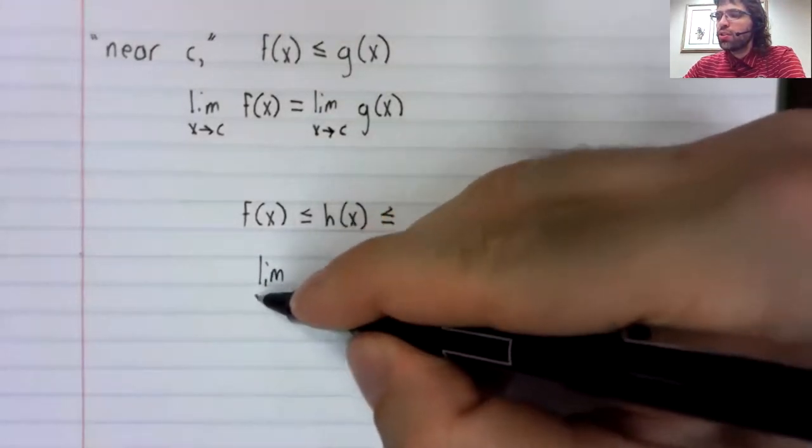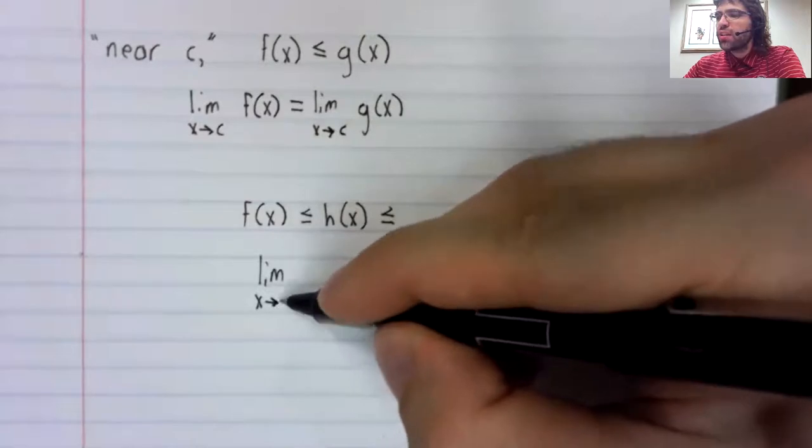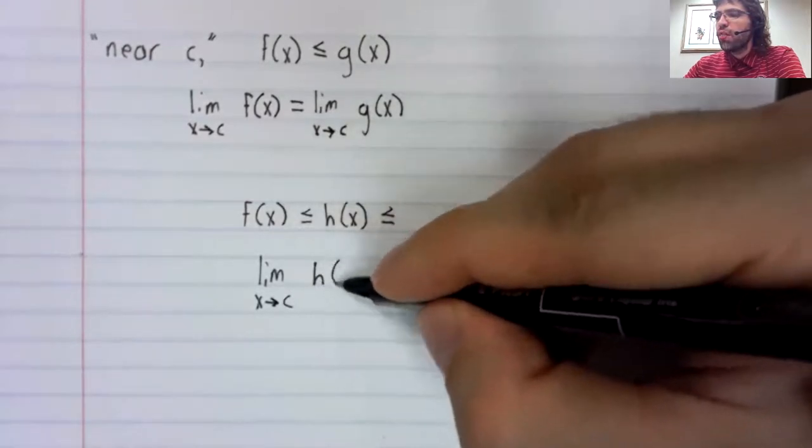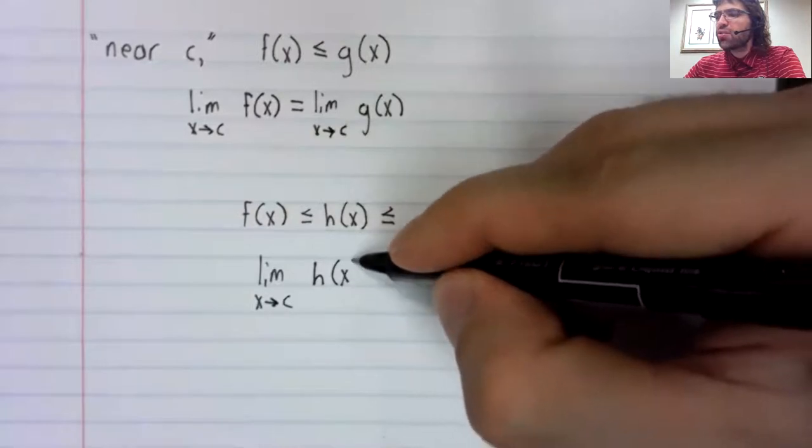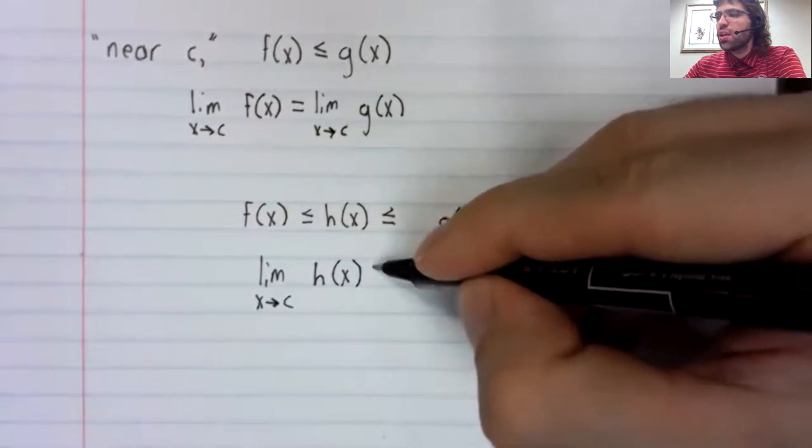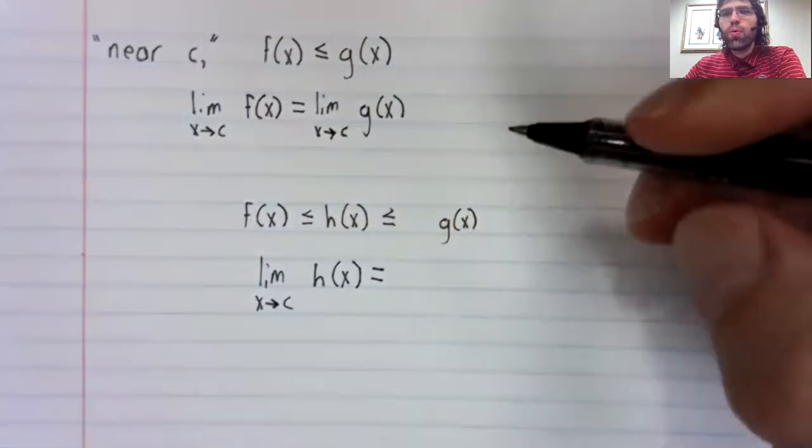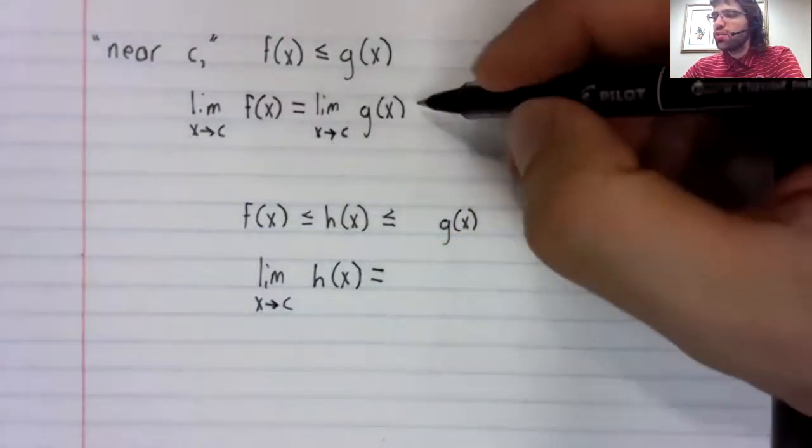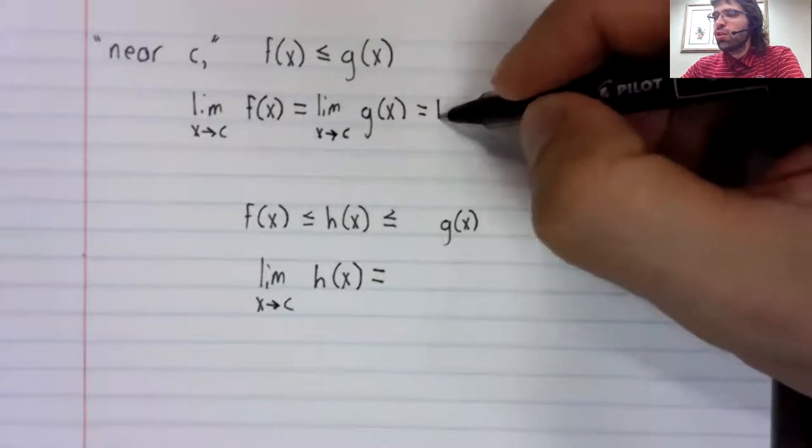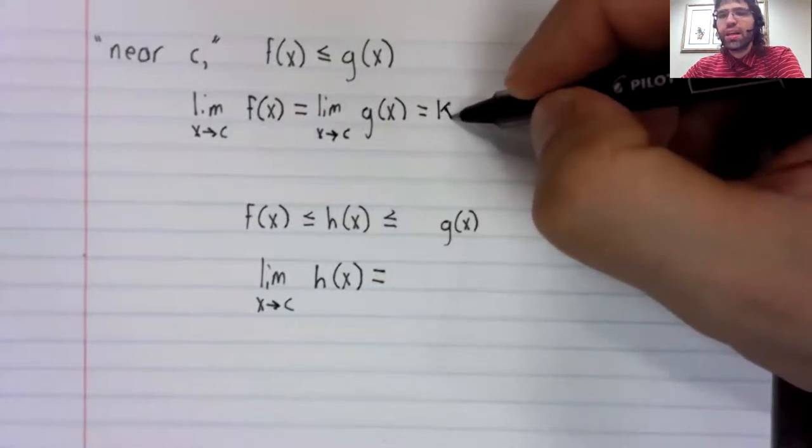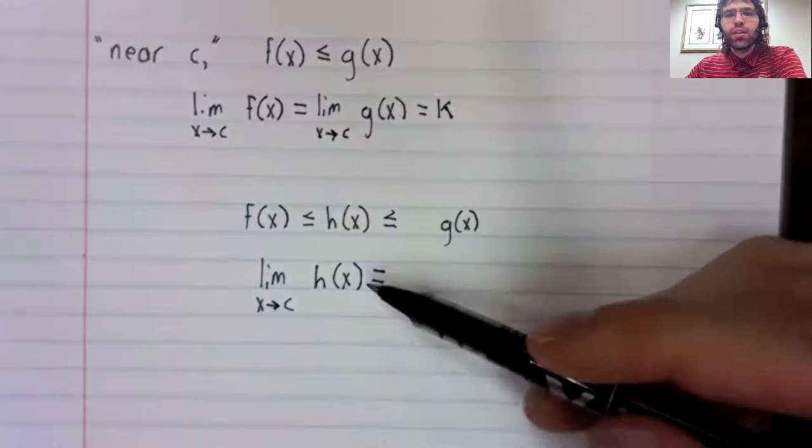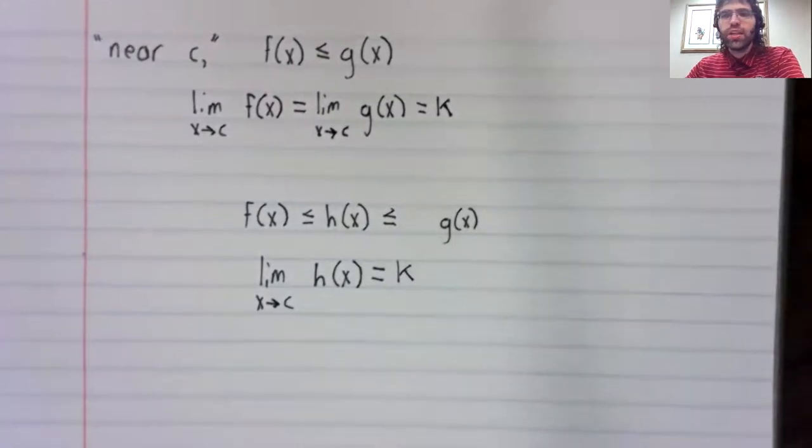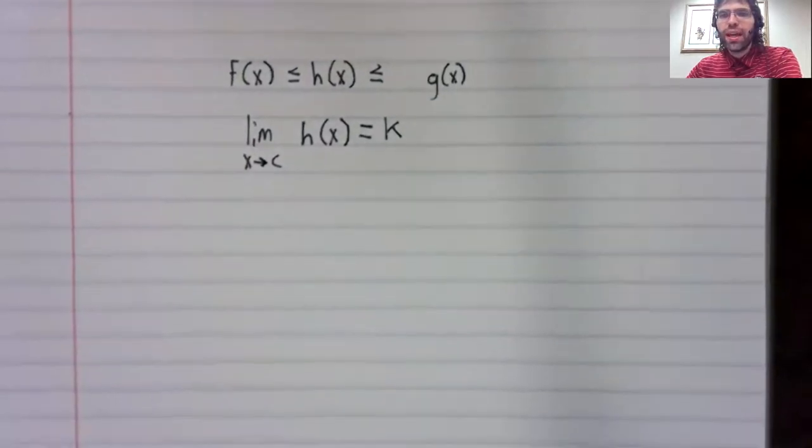The limit as X approaches C of H of X equals this common limit. If we call this common limit K, the limit of this middle function is also K.